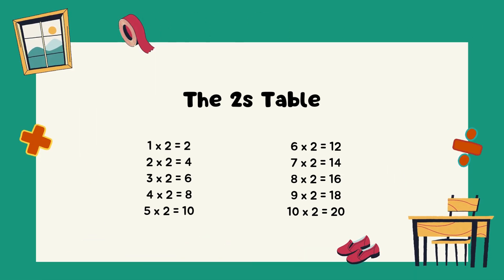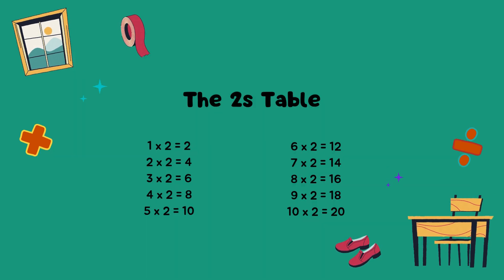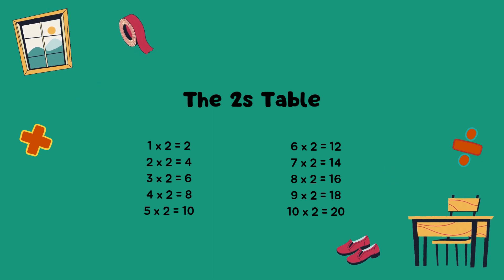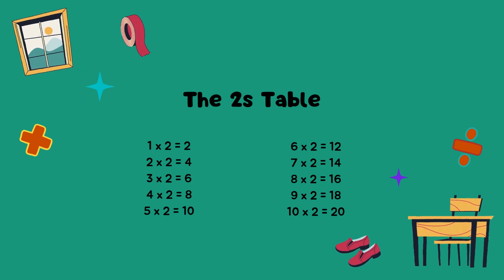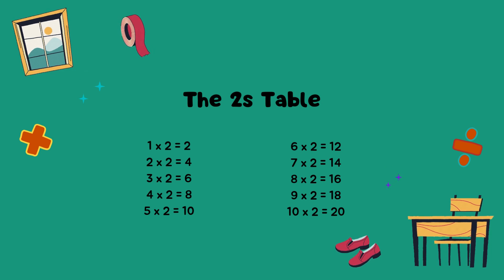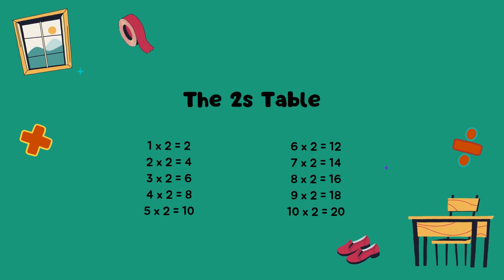The twos table. 1 times 2 equals 2. 2 times 2 equals 4. 3 times 2 equals 6. 4 times 2 equals 8. 5 times 2 equals 10.